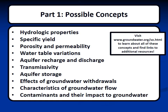For Part 1, some possible concepts students will be expected to know include hydrologic properties, specific yield, porosity and permeability, water table variations, aquifer recharge and discharge, transmissivity, aquifer storage, effects of groundwater withdrawals, characteristics of groundwater flow, and contaminants and their impact to groundwater. You can visit our website to learn about all of these concepts, as well as find further links to additional resources.